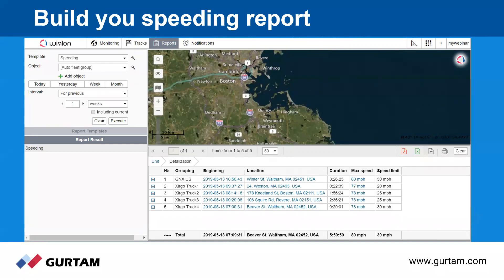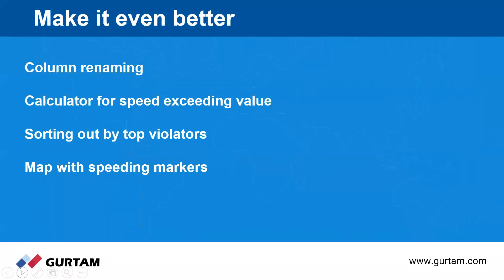Now, what if you want to enhance your report with some advanced features? Today we will cover four: how to rename a column, how to use the calculator feature to calculate the speed exceeding value, how to sort your report by top violators, and how to display speeding markers on the map in the monitoring panel for a visual representation of speedings.